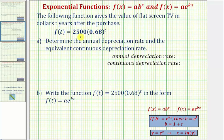Notice how the given exponential function is in the form f of x equals a times b raised to the power of x, where a is the initial or starting amount, and the base b is equal to one plus r, where r would be the growth rate. Notice in this case, because the base is less than one, r is going to be negative, which means we have exponential decay, or in this case, depreciation.